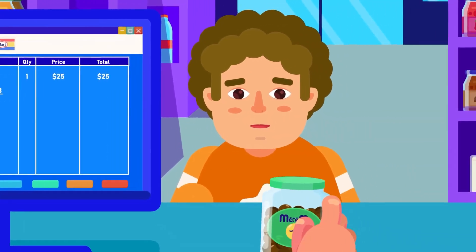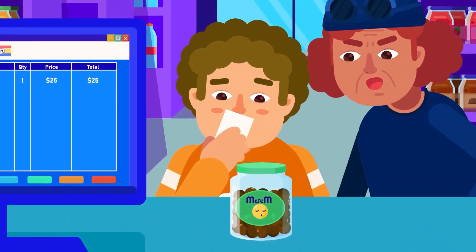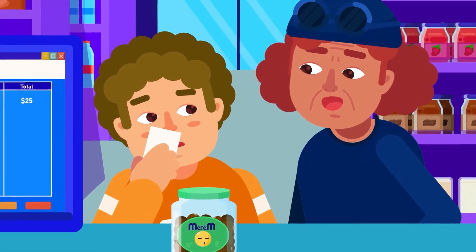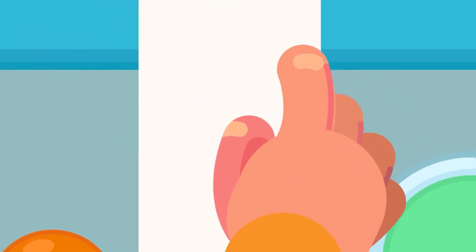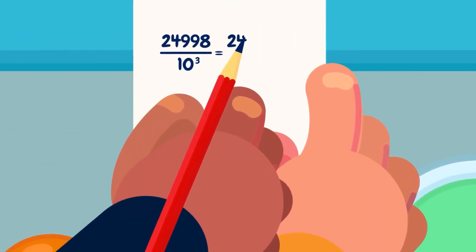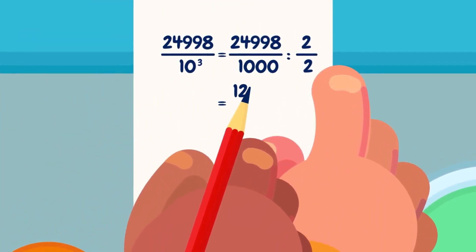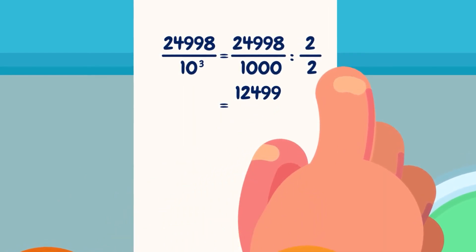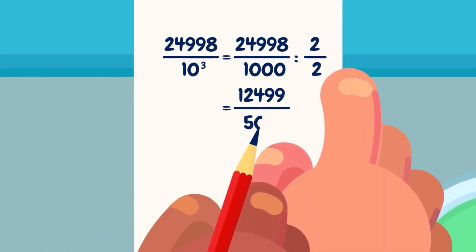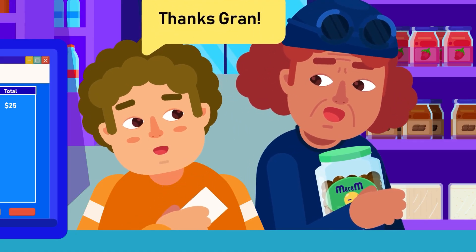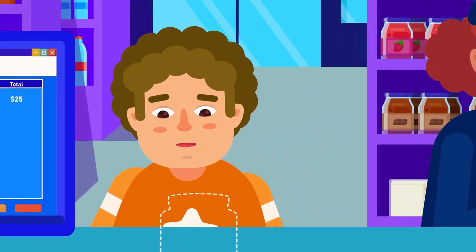The fraction in the answer can further be simplified by dividing both the numerator and the denominator by a common divisor. In this problem, the common divisor is 2. When 24.998 is divided by 2, we get 12.499. When the denominator 1,000 is divided by 2, we get 500. Since these numbers cannot be commonly divided further, this is the simplest fraction.